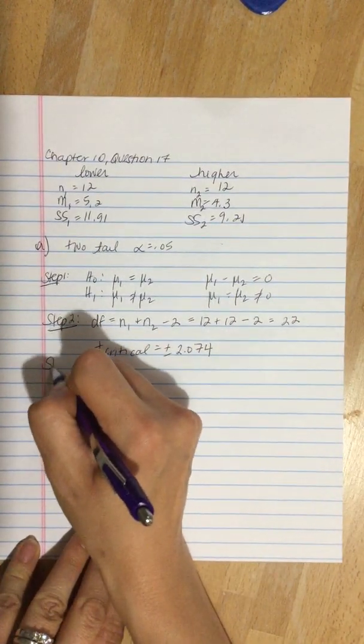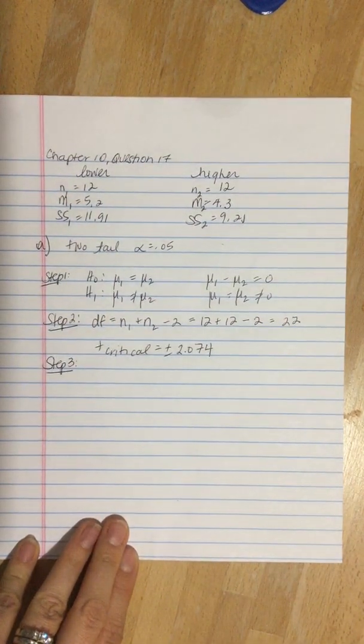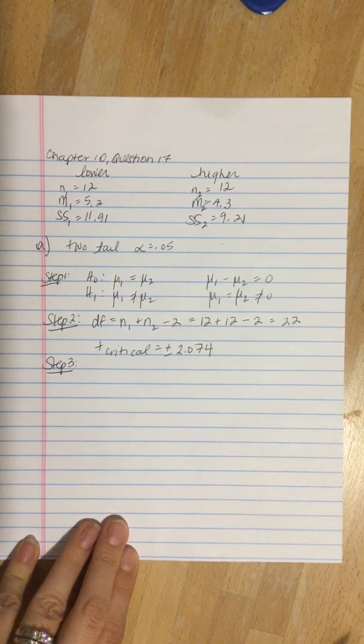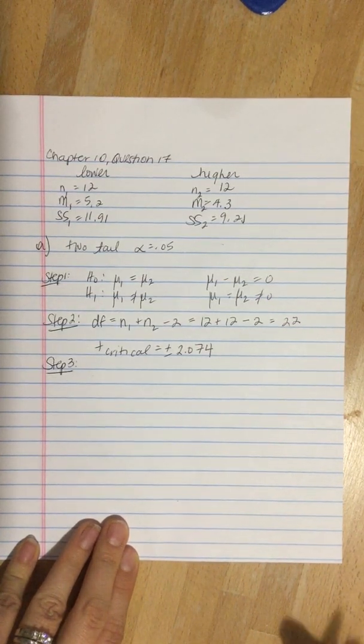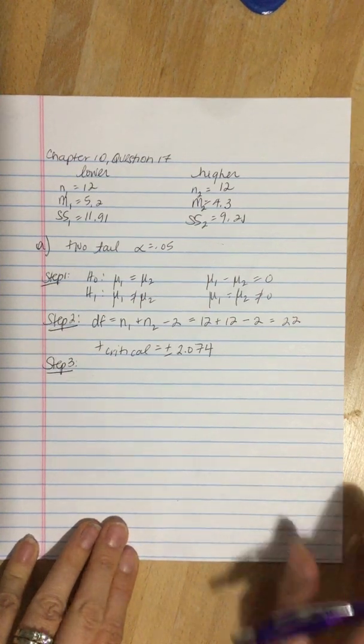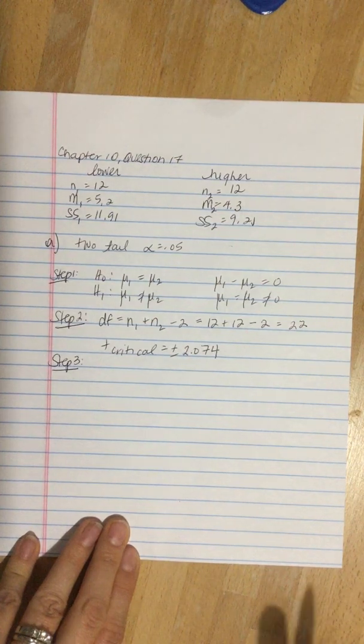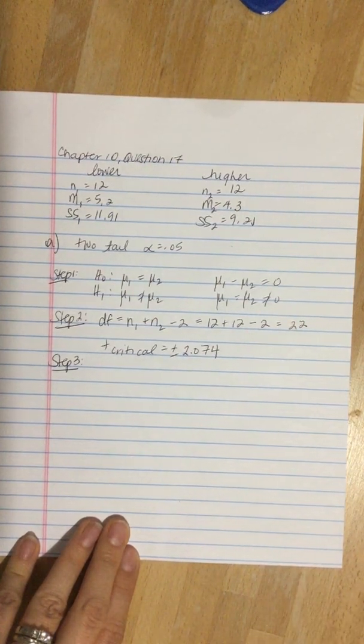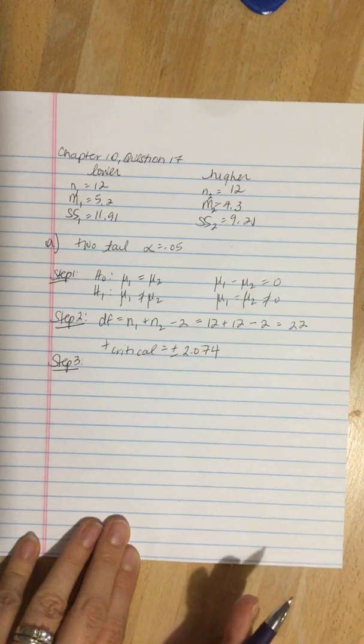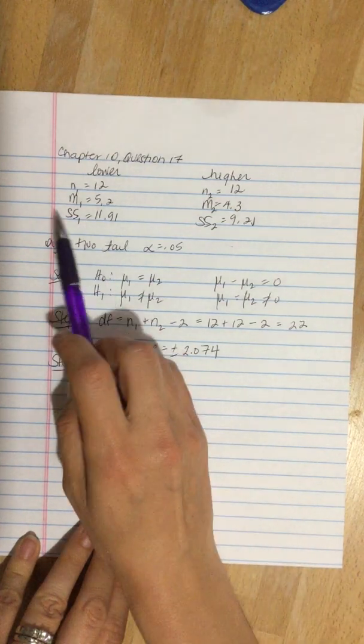Step 3 is to calculate our t. Before we can do that, we need to calculate our estimated standard error. In this case, just to vary it up from the other example I gave you, we could either calculate the pooled variance and then plug that value into the estimated standard error, or we're given sum of squares.